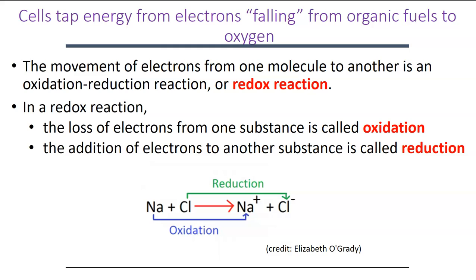When something loses electrons, we say it was oxidized. When something gained those electrons, it was called a reduction. For example, sodium loses an electron and chlorine gains that electron, becoming chloride — that's oxidation and reduction. Cellular respiration is a big series of these redox reactions that ultimately generates high energy electrons used to regenerate ATP from ADP.